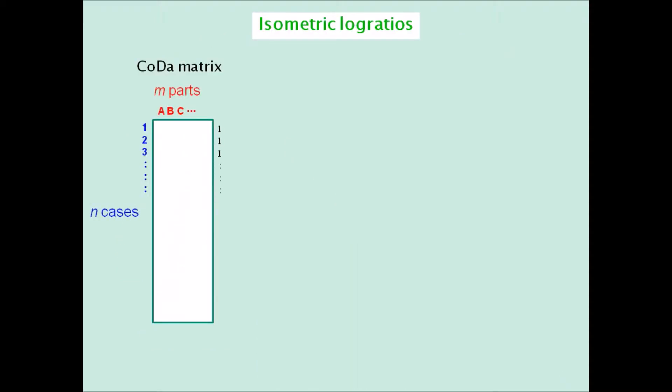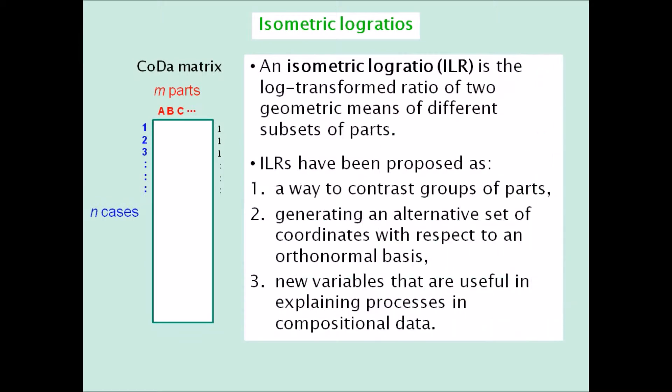To start off: what is an isometric log ratio, or ILR for short? For a typical data matrix of compositional data, an ILR is the logarithm of a ratio where the numerator and the denominator each consists of geometric means of a different subset of compositional parts.